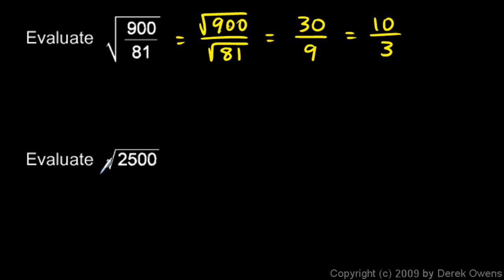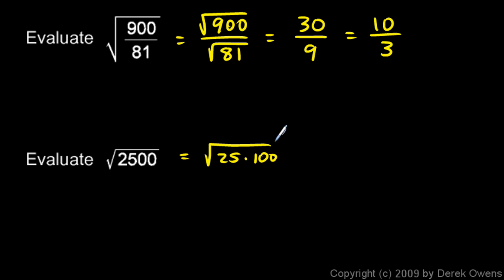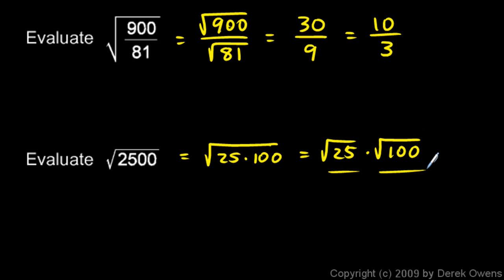In this next example, the square root of 2,500. I can recognize that 2,500 is the same thing as 25 times 100. So this can be written as the square root of 25 times the square root of 100. The square root of 25 is 5, and the square root of 100 is 10. So we get 5 times 10, which is 50.